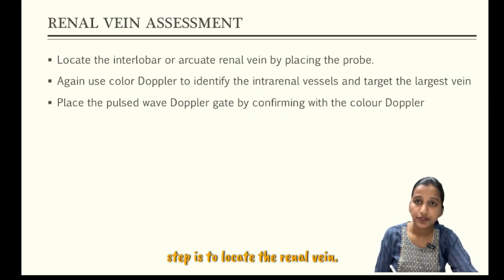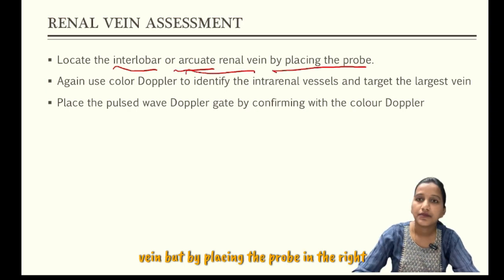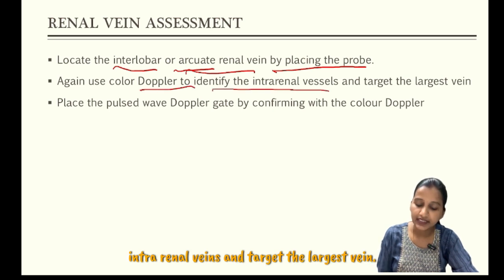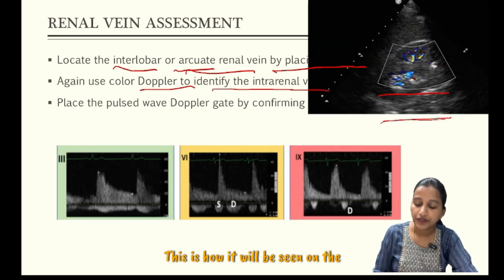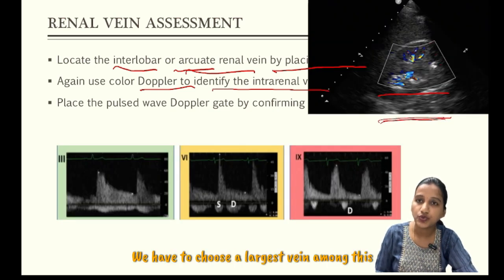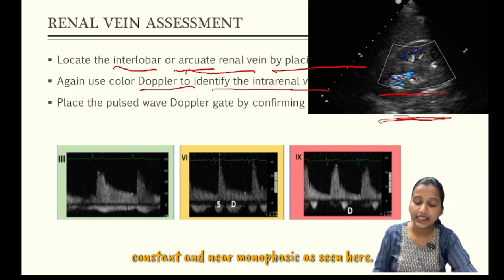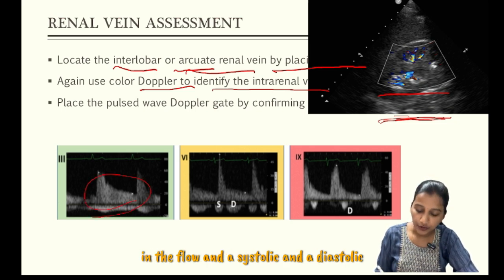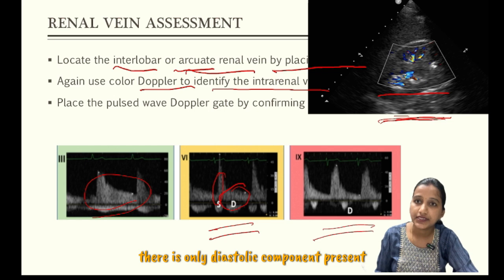Next, coming to renal vein assessment — locate the interlobar or arcuate renal vein by placing the probe in the right posterior axillary line. Use color Doppler to identify the intrarenal veins and target the largest vein; the flow will be away from the probe and hence will be seen as blue color. Choose the largest vein and place the pulse wave Doppler gate. Normally, intrarenal venous flow is constant and near monophasic. Mildly abnormal tracing shows interruption in the flow and a systolic and diastolic component. With severely worsening congestion, there is only a diastolic component present.